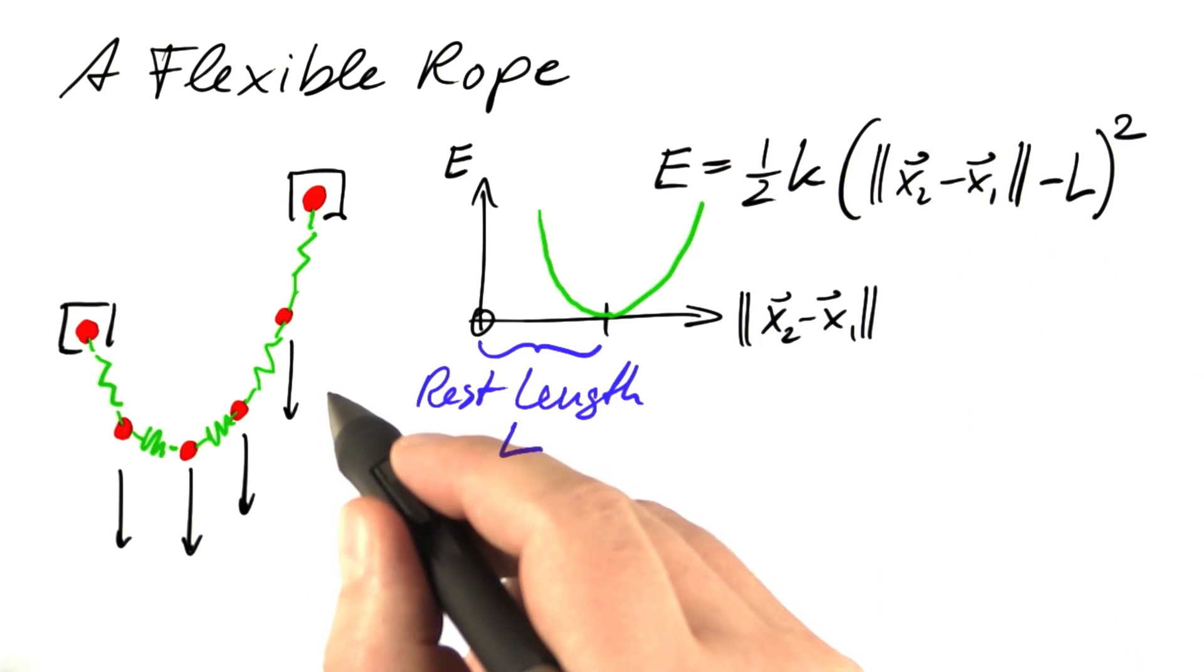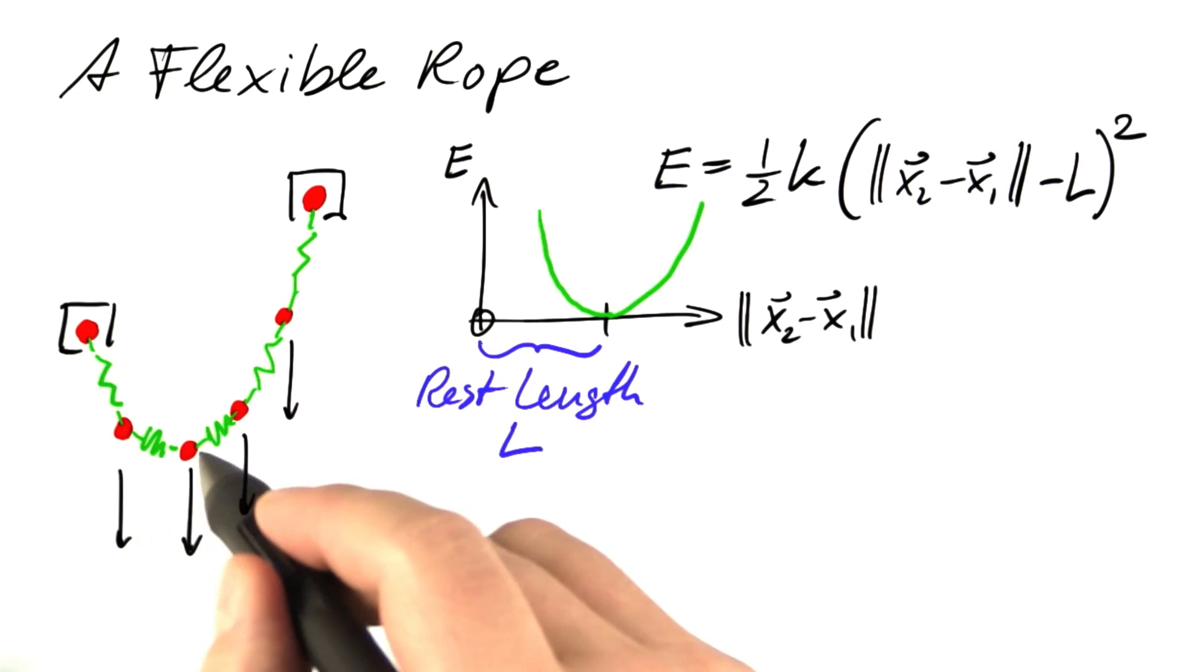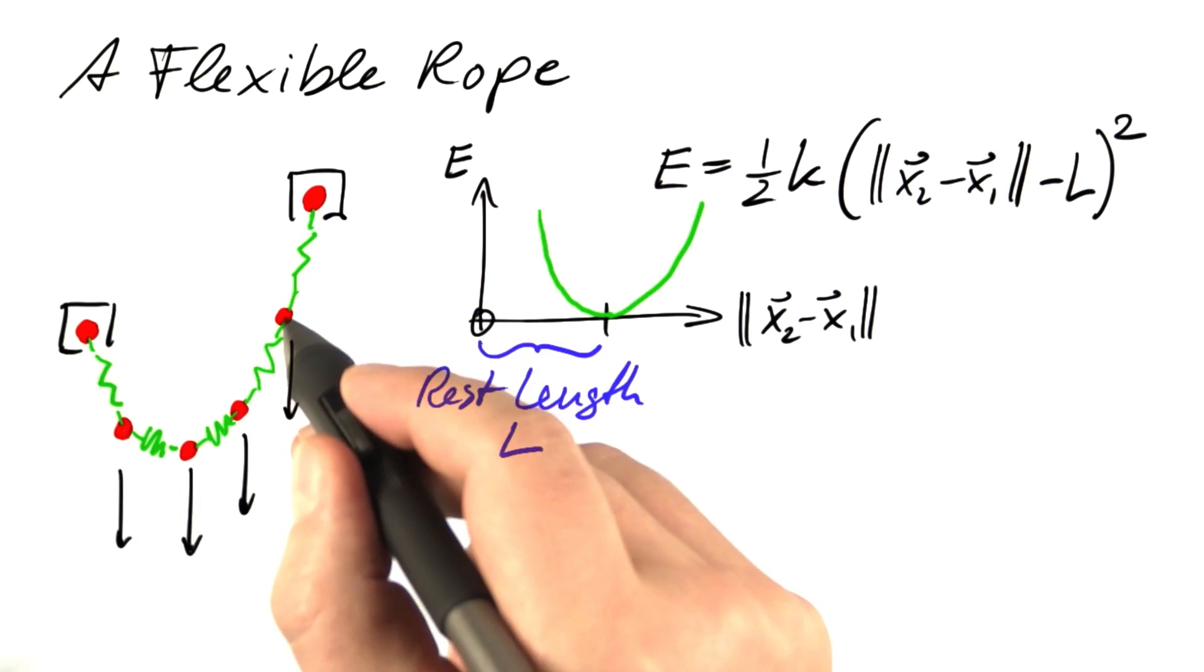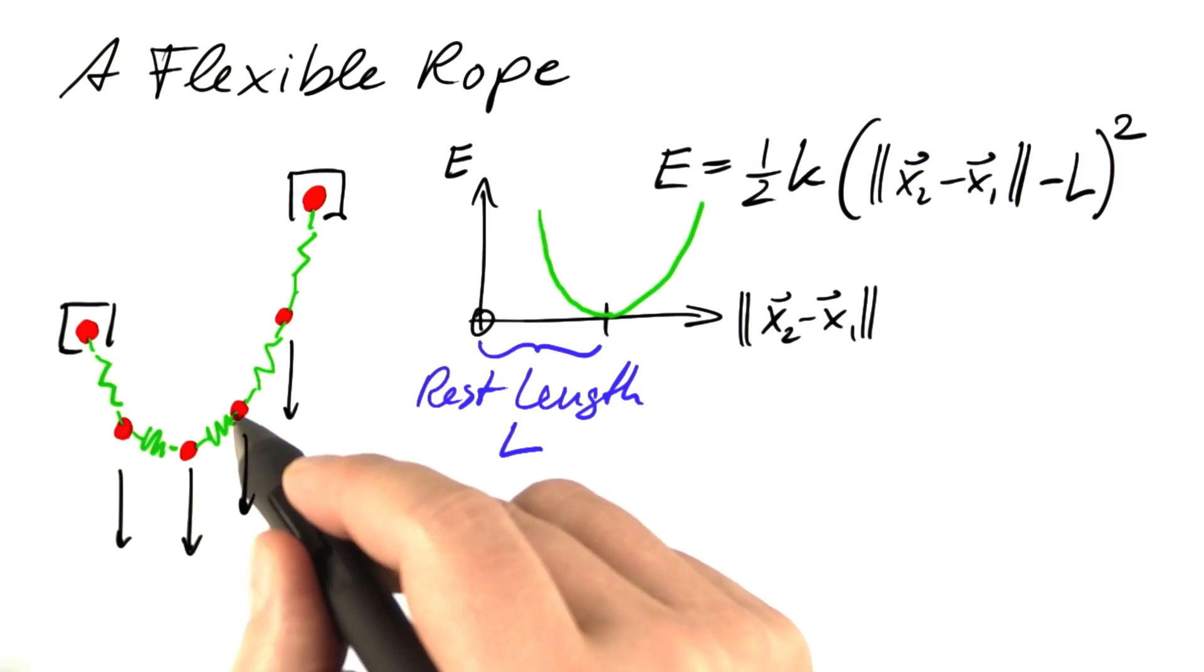To model the mass of that rope, we attach mass points to these strings. Of course, these mass points carry potential energy due to gravity.